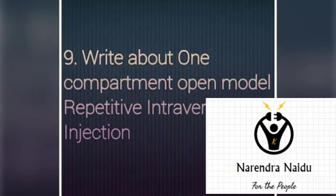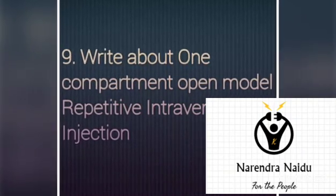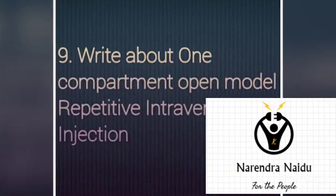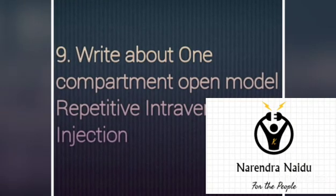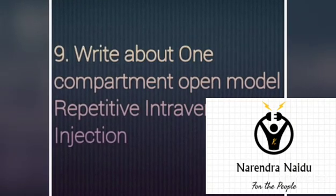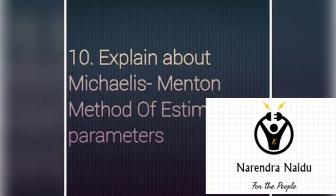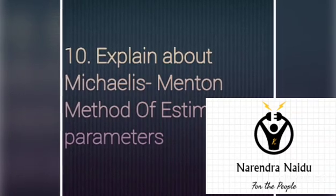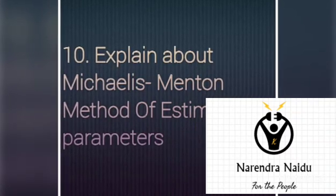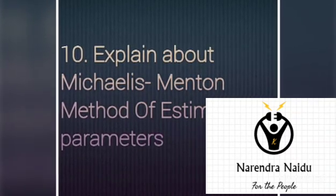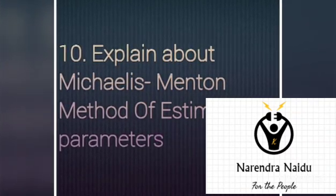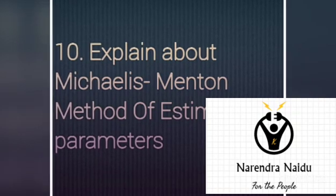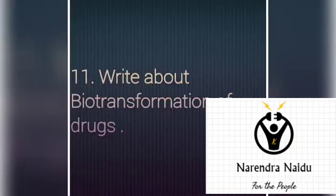The next one is: write about the one-compartment open model repetitive intravenous injection — you have to explain this model in detail. The next one is: explain about the Michaelis-Menten method of estimating parameters — what is the Michaelis-Menten method and its parameters.